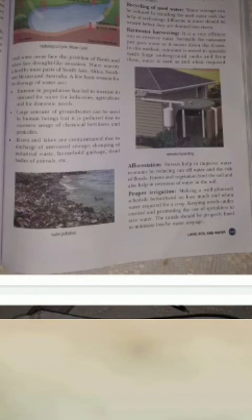How can we conserve and manage water? A number of methods can be employed to conserve water. First, recycling of used water, rainwater harvesting. It is a very efficient way to conserve water. Normally, the rainwater just goes to waste as it moves down the drains. If we collect this water, we can use it in many ways. Afforestation, forests help to improve water economy by reducing runoff of water and the risk of floods. Proper irrigation is also a method to conserve water and the proper utilization of water for domestic purposes. Water can be conserved by people by carefully utilizing the water at home. They can check leakage in pipes, can use a bucket of water to wash their car instead of a pipe.